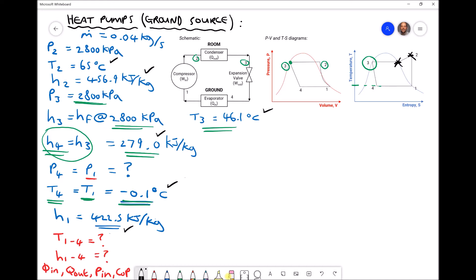We have our T4 temperature, which is the same as T1, minus 0.1 degrees C. And we have our H4 enthalpy value because it's the same as H3, 279.0. So in the bottom left-hand corner, we've determined temperatures 1 to 4 and we've determined enthalpy values 1 to 4.